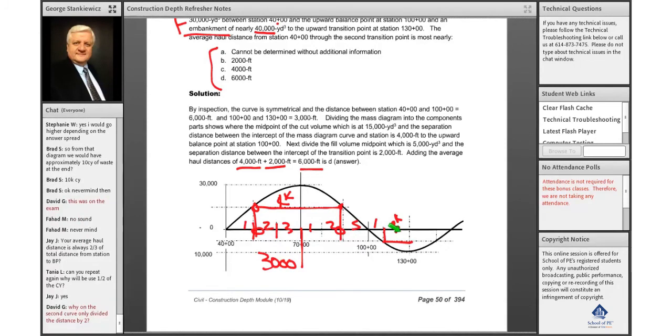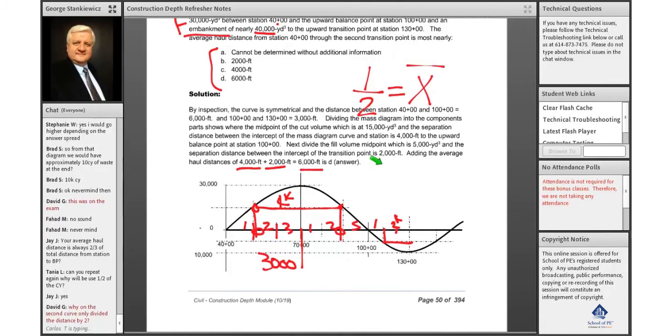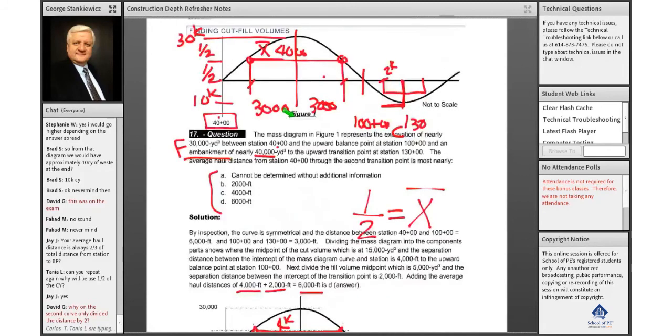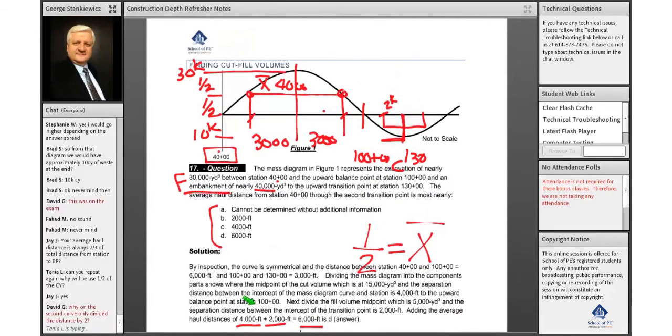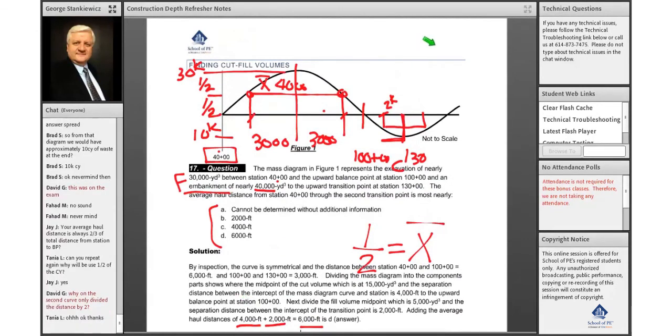Now this is another question: can you repeat why we will use half of the cubic yards? Well, one half is equal to the average. The question asks for the average. So if we have 30,000 cubic yards and we were asked to find what the average is, we divide by 2. 30,000 divided by 2 is equal to our average. Does that answer your question?